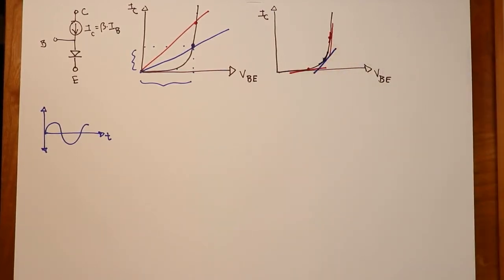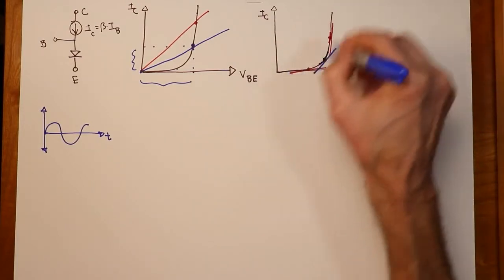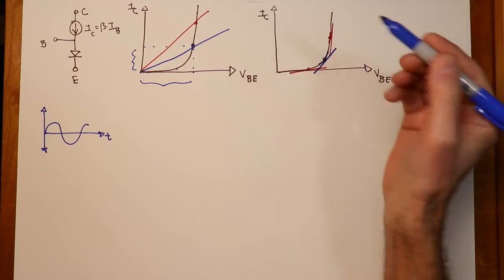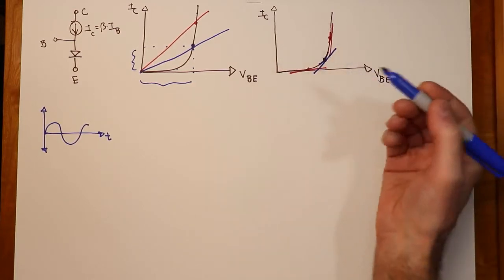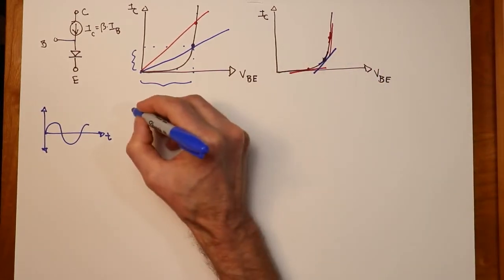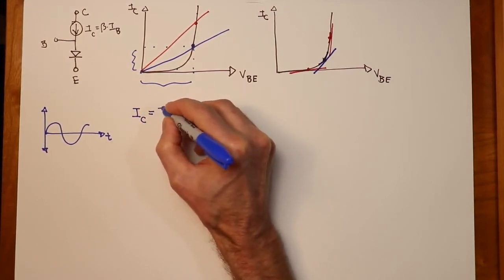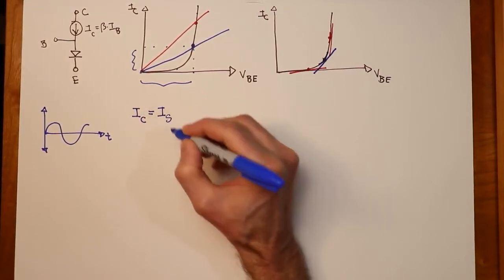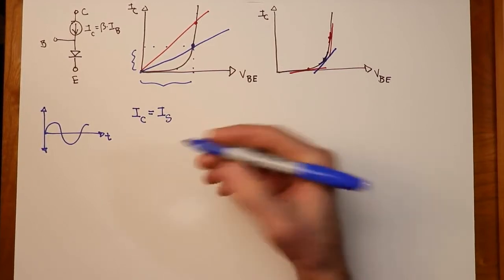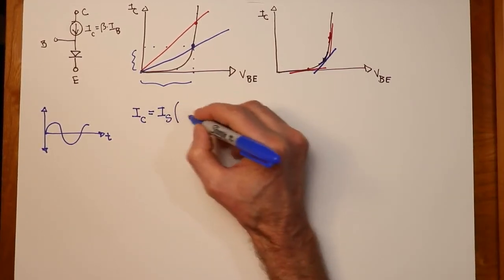Well, what we would have to do is actually plot this equation. What is this equation that we have plotted? Well, that's the standard Shockley equation, which basically says that your collector current is equal to the reverse saturation current times the quantity of E, the base of the natural log, raised to VBE,